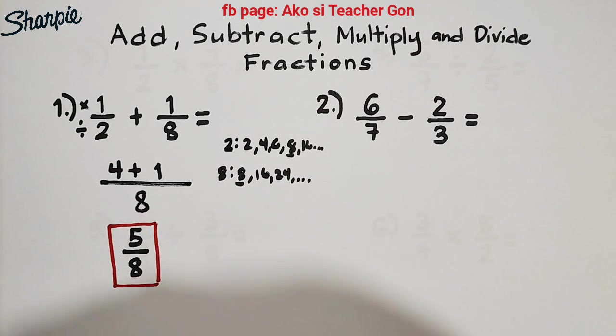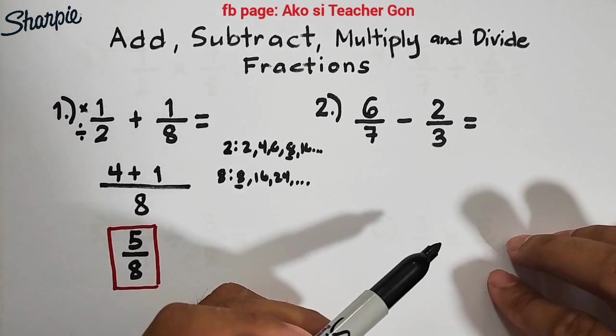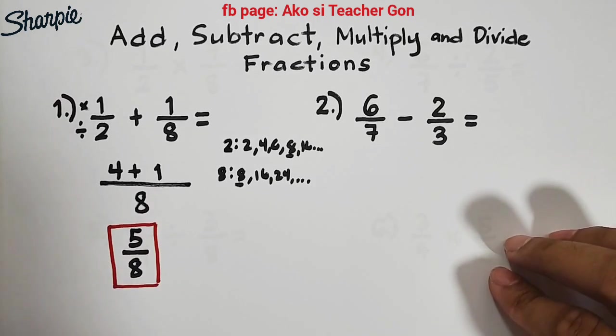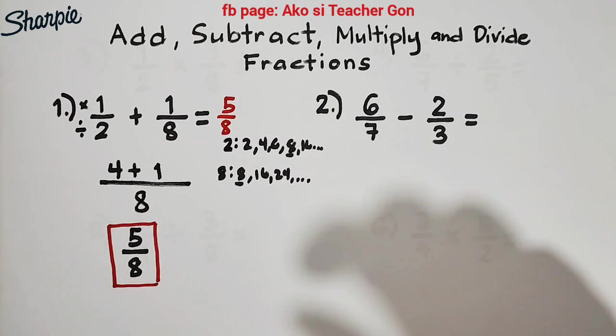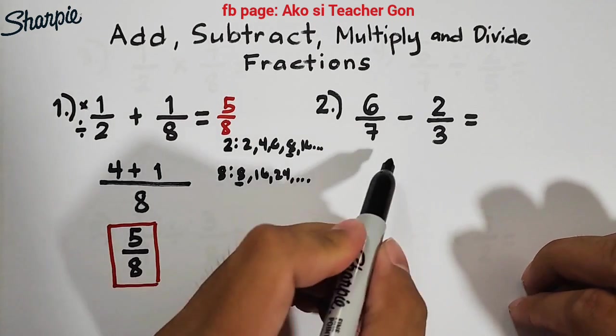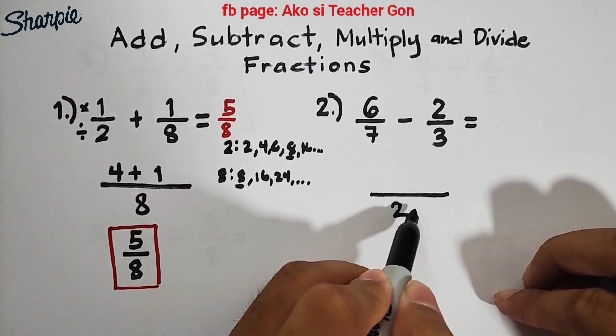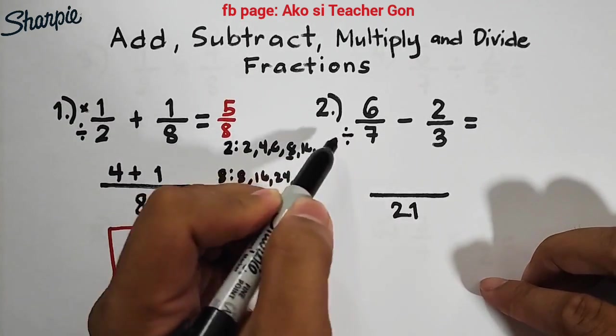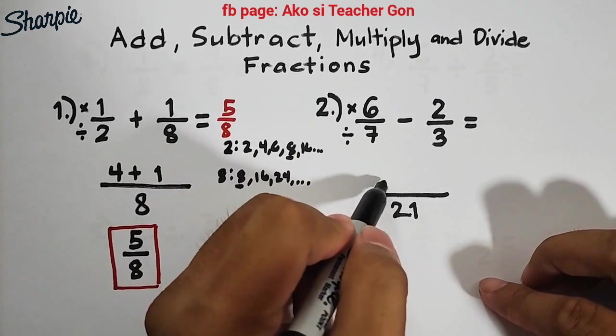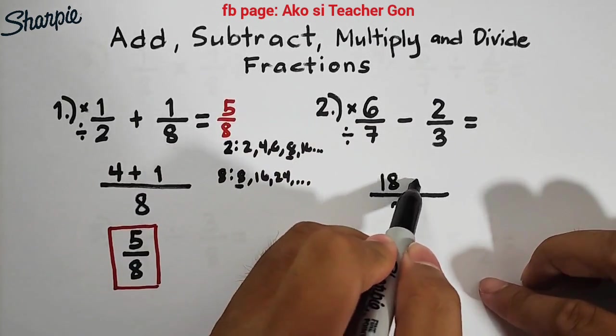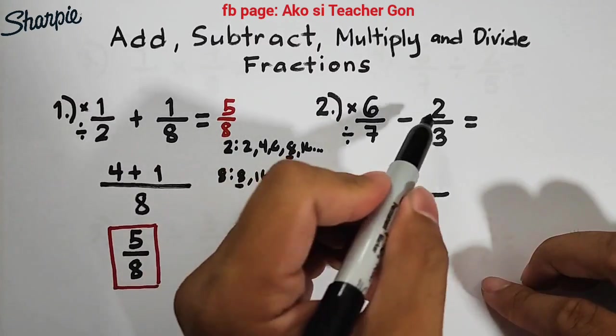Now let's move on with item number two. For number two, we have 6/7 minus 2/3. As you can see, we have different denominators again, so we need to find the LCD. Our denominators are 7 and 3, so the LCM is 21, which is our LCD. Let's repeat the process: divide, multiply. 21 divided by 7 is 3 times 6, which equals 18.